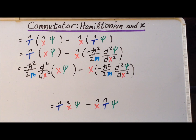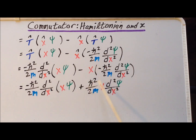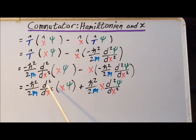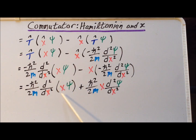In the next step we do some simplifications. On the right-hand side, minus times minus gives us plus, and the variable x commutes with the constant h-bar squared over 2m, so I shift x to the left of the derivative for clarity. On the left-hand side, we emphasize that we now have to take the second derivative with respect to x of a product of two functions, since both x and ψ are functions of x. So we must apply the product rule.